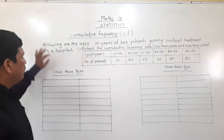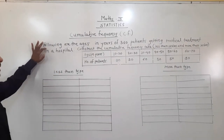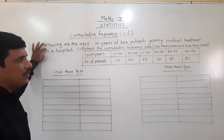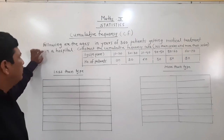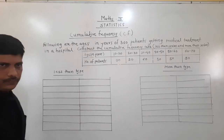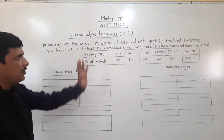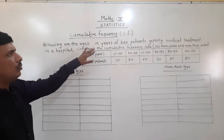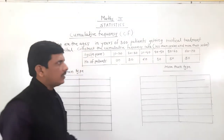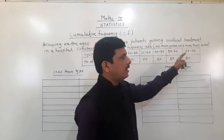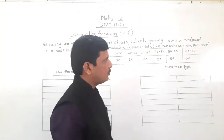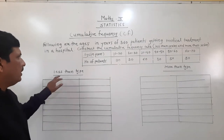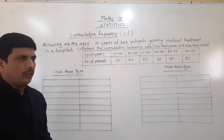Here the following are the ages in years of 360 patients getting medical treatment in a hospital. We need to construct the cumulative frequency table — in reality it is the less than series and more than series. So these two types of cumulative frequency tables we need to prepare: less than type and more than type.